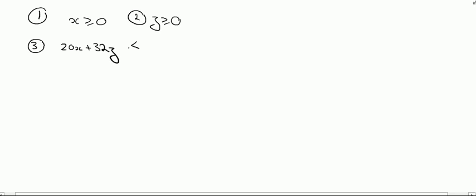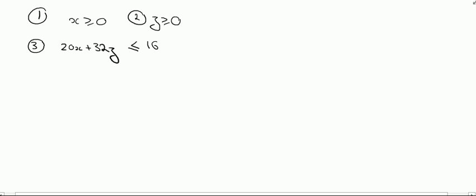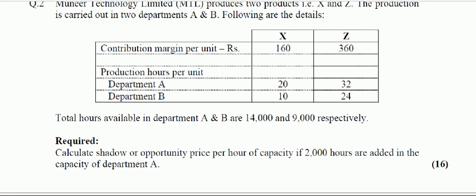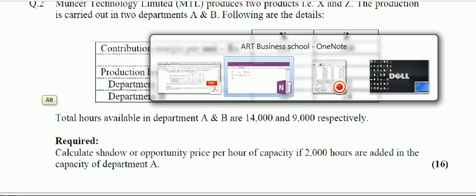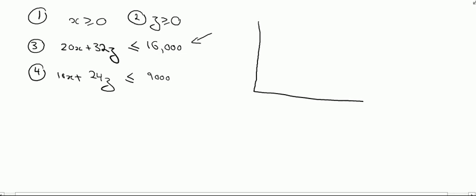The constraint becomes: 20x plus 32z should be less than or equal to 16,000 (the new limit, increased from 14,000). The fourth constraint remains: 10x plus 24z is less than or equal to 9,000. Only the Department A constraint has changed.